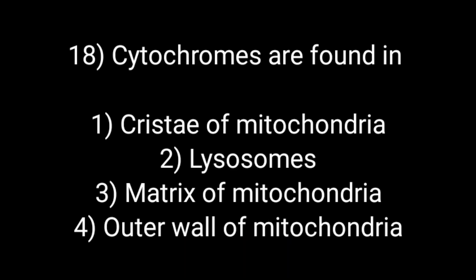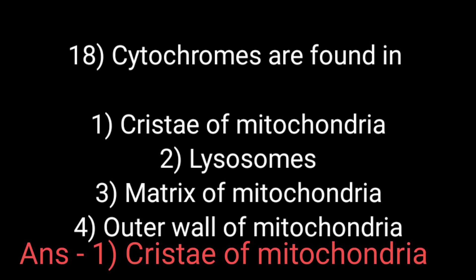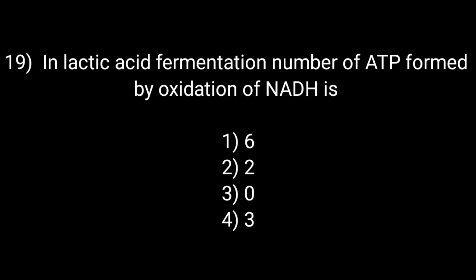Cytochromes are found in: Option first: cristae of mitochondria. Option number second: lysosomes. Option number third: matrix of mitochondria. And option number fourth: outer wall of mitochondria. The correct answer is option number first: cristae of mitochondria.